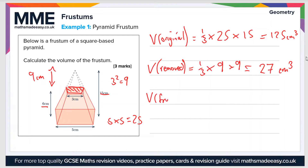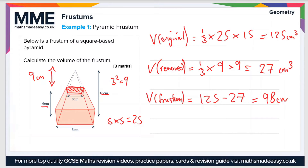The volume of the frustum is just the difference between the volume of the original pyramid and the one that's been removed, so that's 125 minus 27, which equals 98 centimeters cubed.